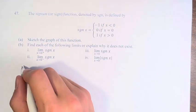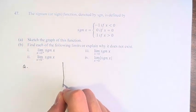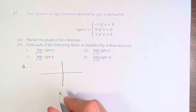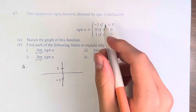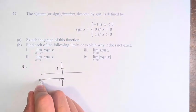So first we're asked to sketch the graph of this function. And we can see that 1 and negative 1, if we're less than 0, we have a value of negative 1.